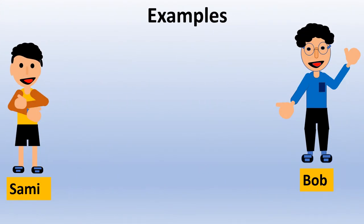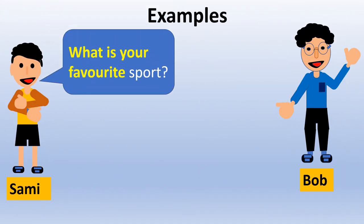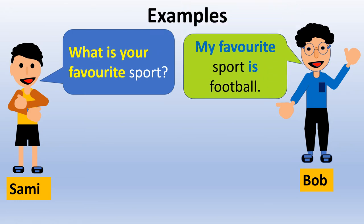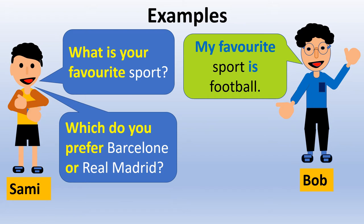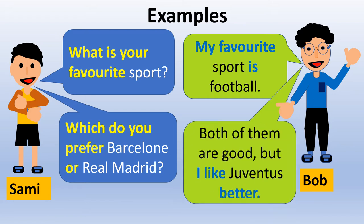Examples — Listen and practice. A: What is your favourite sport? B: My favourite sport is football. A: Which do you prefer, Barcelona or Real Madrid? B: Both of them are good, but I like Juventus better.